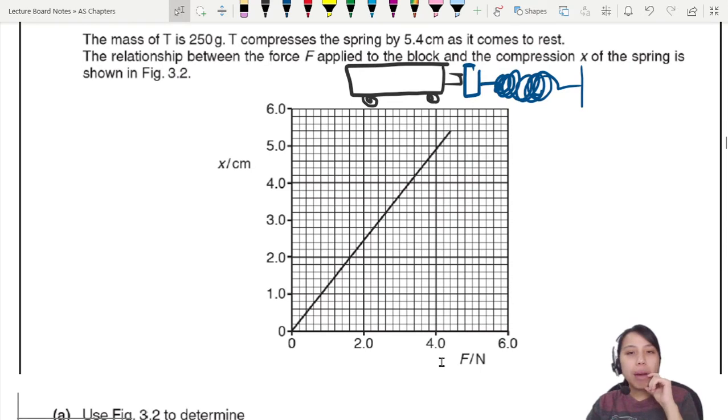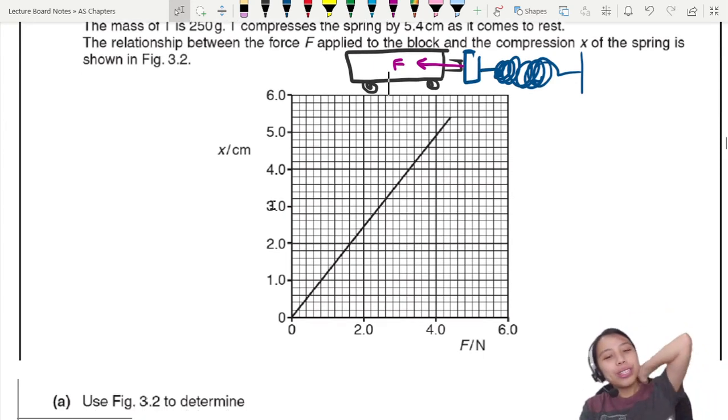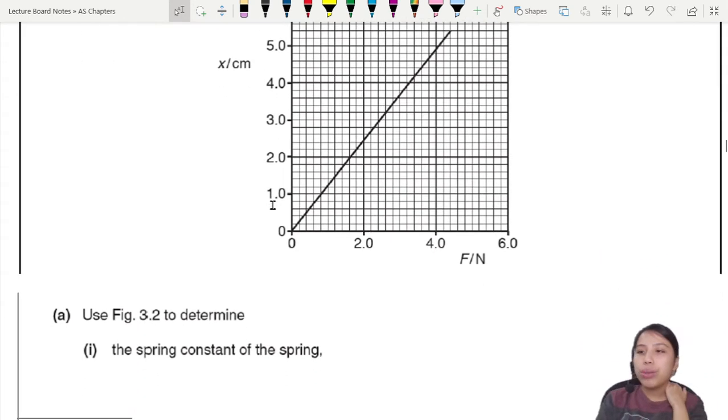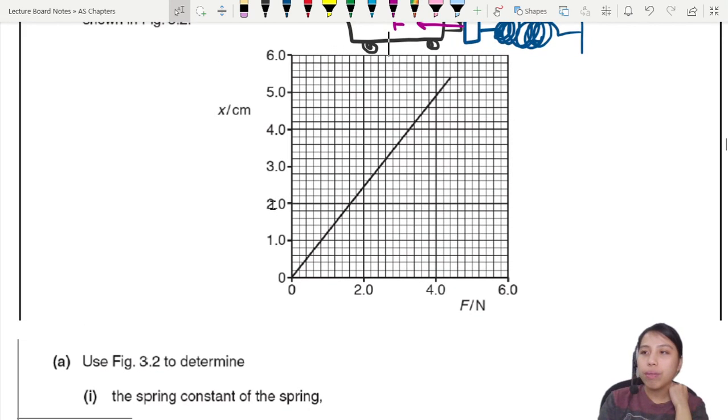The spring, while you compress it, pushes against you. This spring by being compressed exerts a force to stop this block, and the force gets bigger depending on extension. This graph is a bit weird - usually we put F here and x here, but somehow they swapped the axes, so you've got to be careful. We need to use the graph to determine the spring constant.